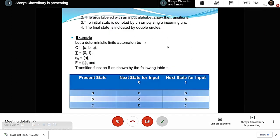DFA can be represented graphically as state diagrams. The vertices represent the states, the arcs labeled with input alphabets show the transitions. The initial state is denoted by an empty single incoming arc, and the final state is indicated by double circles.